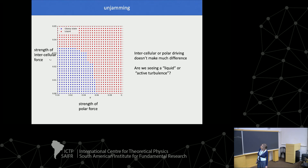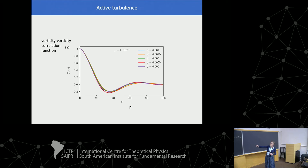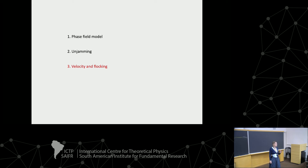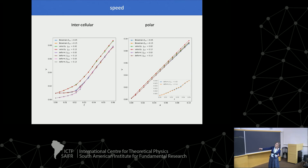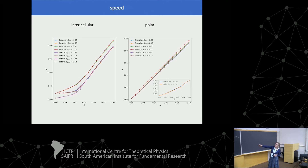The liquid phase looks very much like active turbulence — we can see topological defects, and there's a vorticity-vorticity correlation with a dip that people associate with active turbulence. Looking at velocity: in the glass, cells don't move very fast at all, then they start moving faster with larger forces — that makes sense. The same trend holds whether you change the intercellular forces or the polar forces.